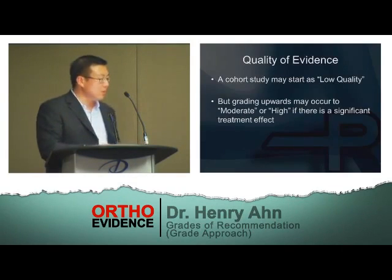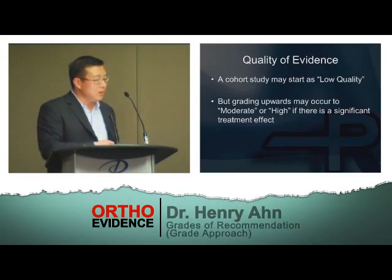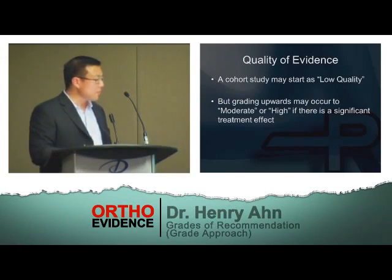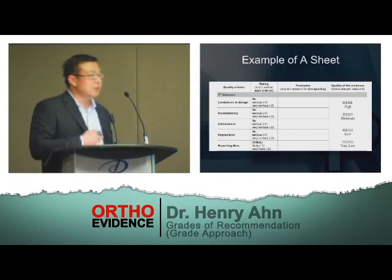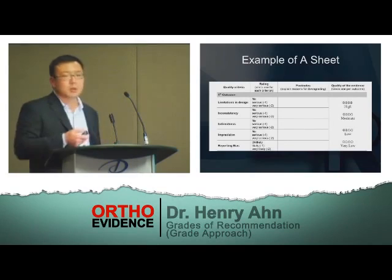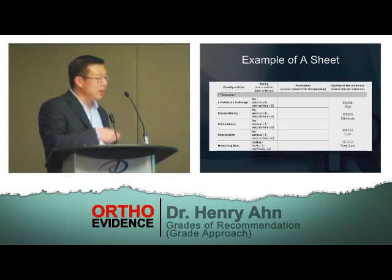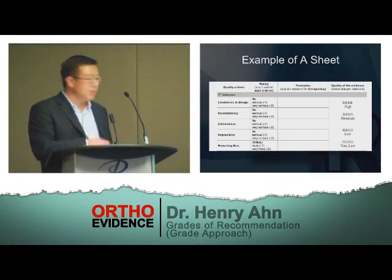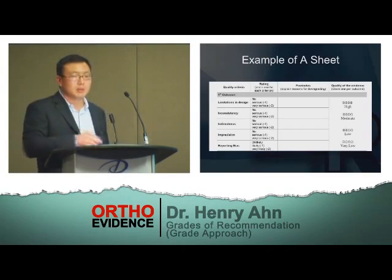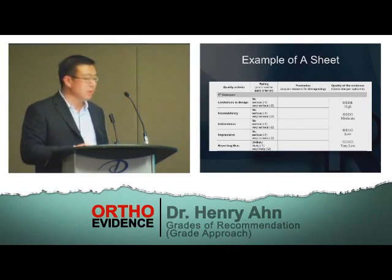As an example, a cohort study starts with low quality and can move upward because of a significant treatment effect. There is an example worksheet used when developing guidelines that clearly outlines, for a given outcome, the various factors that may decrease the quality of evidence for that outcome measure.